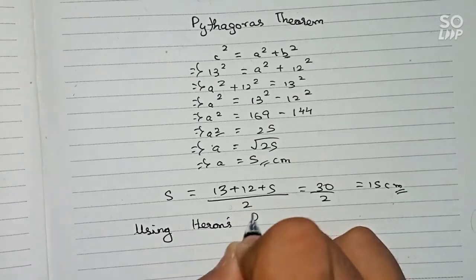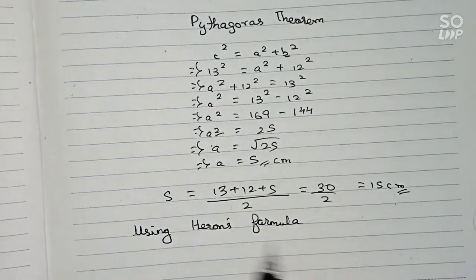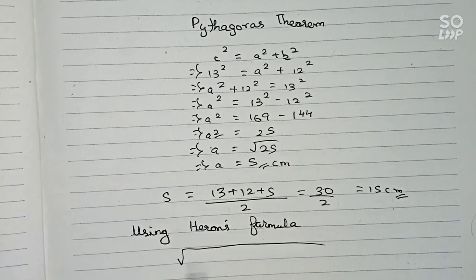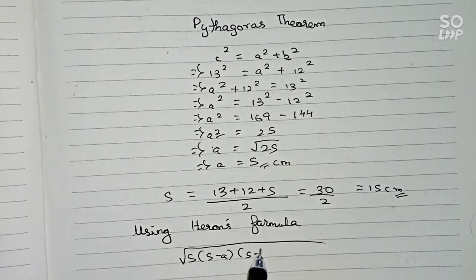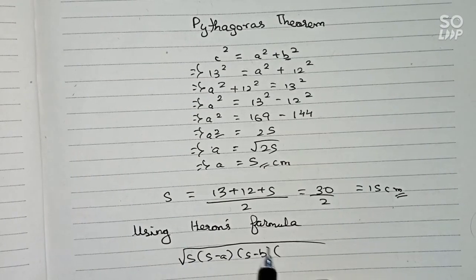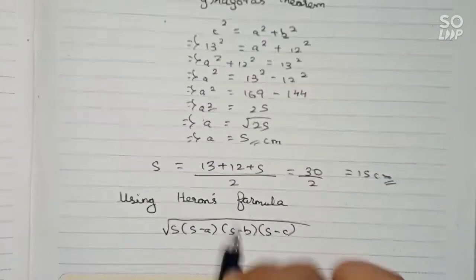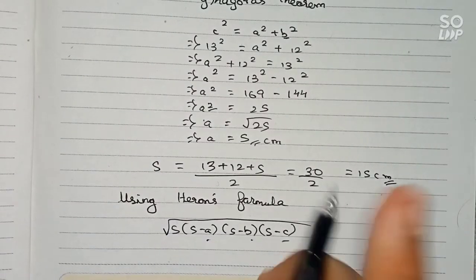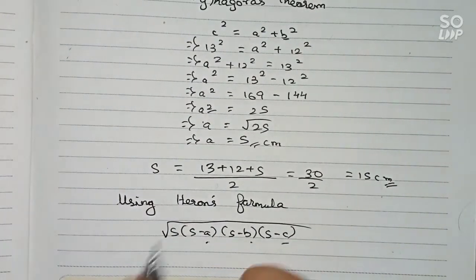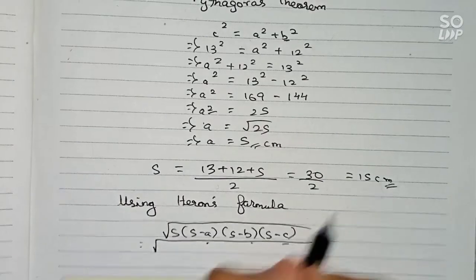Using Heron's formula, the area of the triangle = √(s × (s−a) × (s−b) × (s−c)), where a, b, and c are the sides — that is 13, 12, and 5. Substituting s = 15: